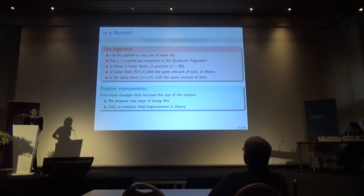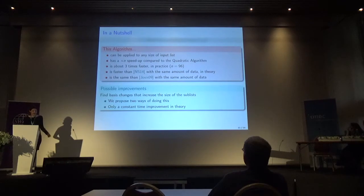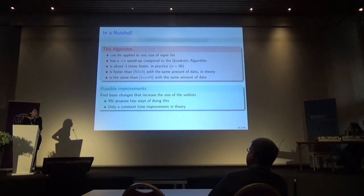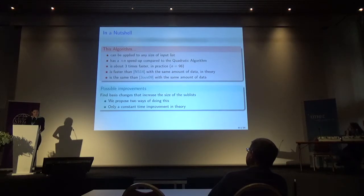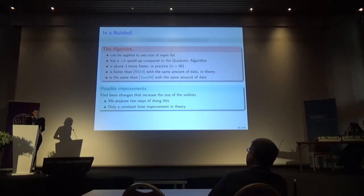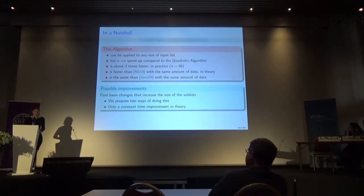We have also been thinking of possible improvements. Our idea was to find basis changes that increase the size of the sub-list we consider, so that we reduce the number of iterations. In the paper, we propose two ways of doing this, but we only obtain constant time improvement.